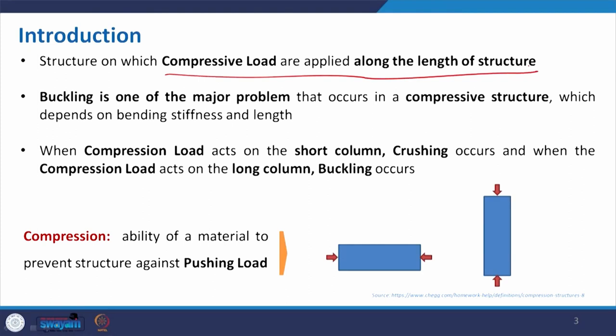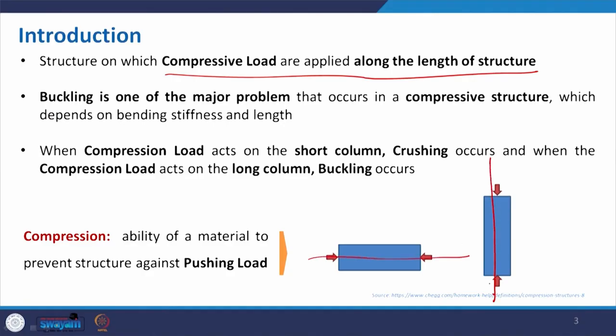To start with: structures on which compressive loads are applied along the length of the structure. Based on the principal axis, the material — depending on density, strength, and hardness — will react to the applied load. In this case the load applied along the main axis gives compression, and at the micro level particles are trying to compress and come close to each other. In compressive structures the load is predominantly compressive. Along with that, buckling is one of the major problems, which depends on bending stiffness and length.